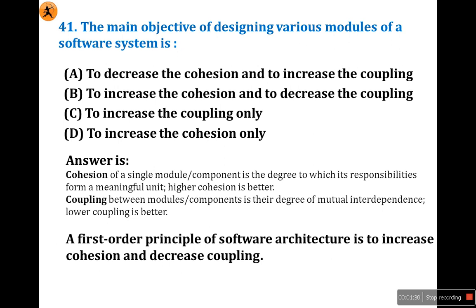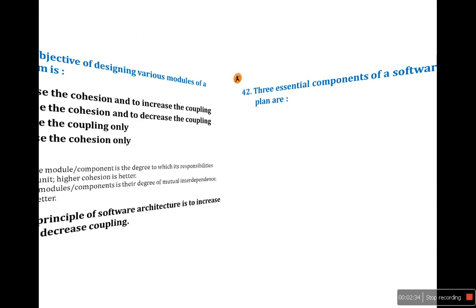Higher cohesion is better. Coupling refers to the degree of mutual interdependence between modules or components. Cohesion is related to a single module, so higher cohesion is better. Coupling is related to multiple modules, so lower coupling is better. The first order principle of software architecture is to increase cohesion and decrease coupling. So the answer is B: to increase the cohesion and decrease the coupling. Coupling between modules should be minimized; cohesion within a single module should be maximized.